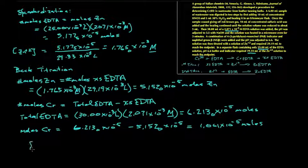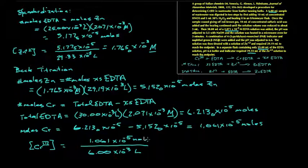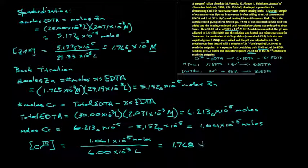From that we can calculate the concentration of chromium that must have been present in the original sample by dividing that number of moles by the volume that the sample was contained in. And that's the six milliliter pipette of the original sample. This gives us a final value of 1.768 times 10 to the minus three molar chromium.